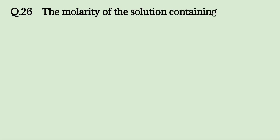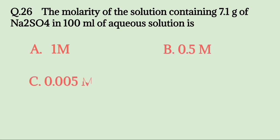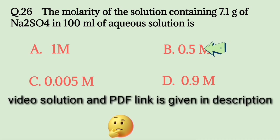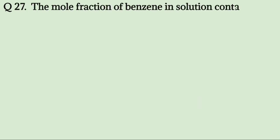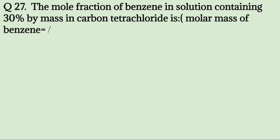The molality of the solution containing 7.1g of Na2SO4 in 100ml of aqueous solution is: A. 1M, B. 0.5M, C. 0.005M, D. 0.9M. Try to solve it. The correct answer is 0.5M.